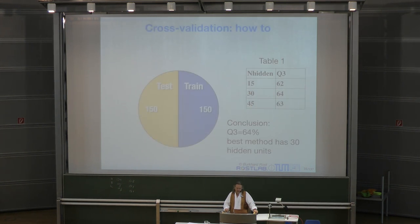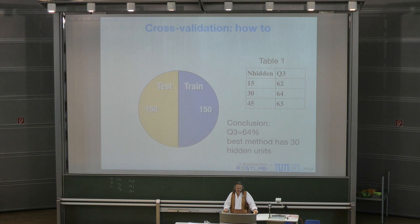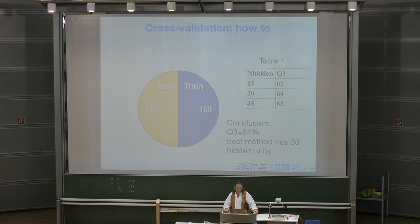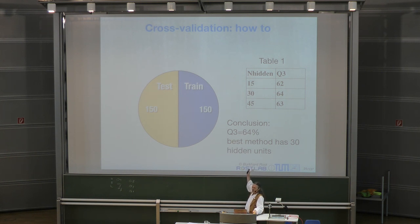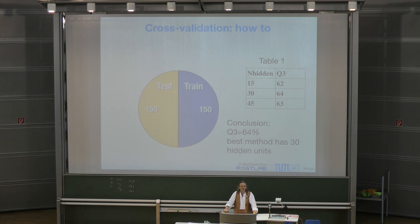Let's talk about another aspect of cross-validation and machine learning. Say we had a case of 300 proteins, half used for training and half for testing. In your paper, you put a table showing a variety of different Q3 values for different neural networks — for hidden units of 15, 30, and 45, you get slightly different results. Your conclusion is that the best method uses 30 units.